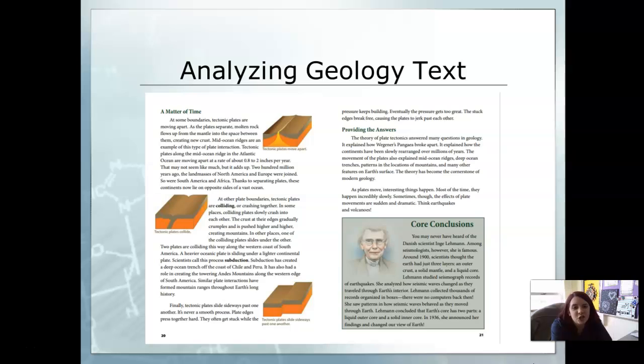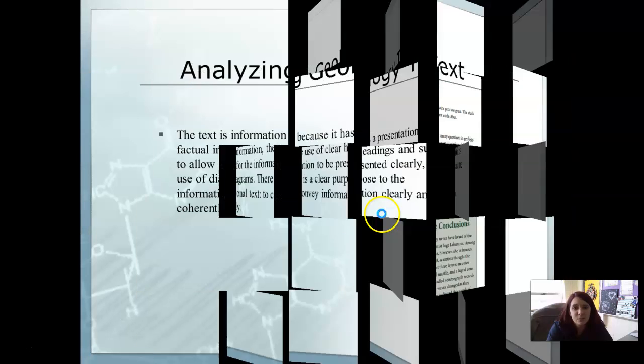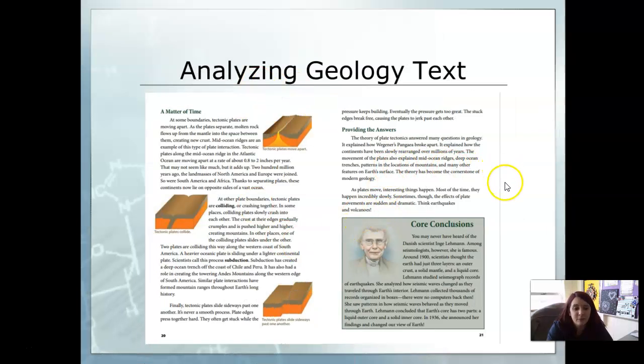Now we're going to analyze a geology text. This example talks about the science behind tectonic plates. This text is informational because it presents factual information, has clear headings and subtitles, and uses diagrams clearly. The purpose of an informational text is to convey information clearly and coherently.